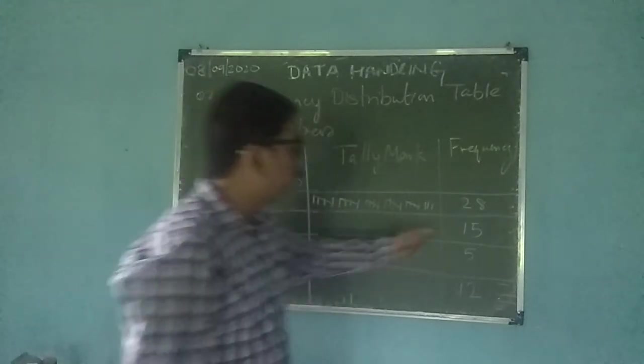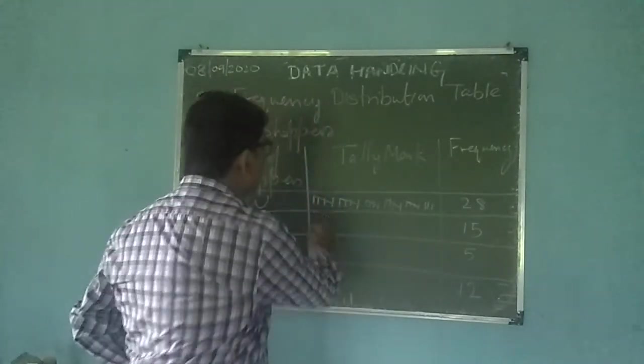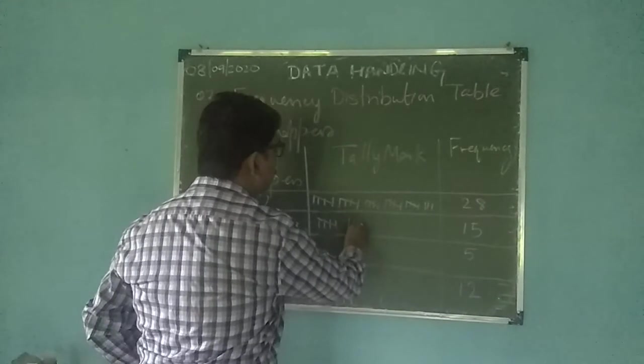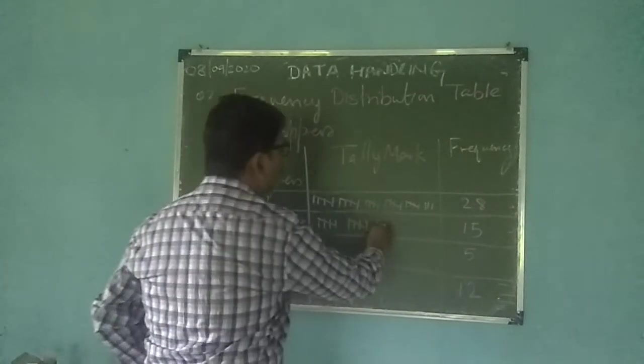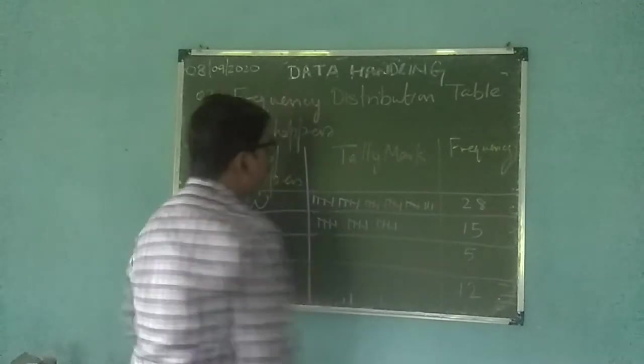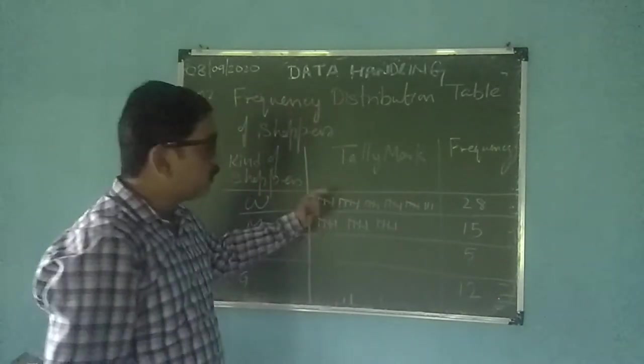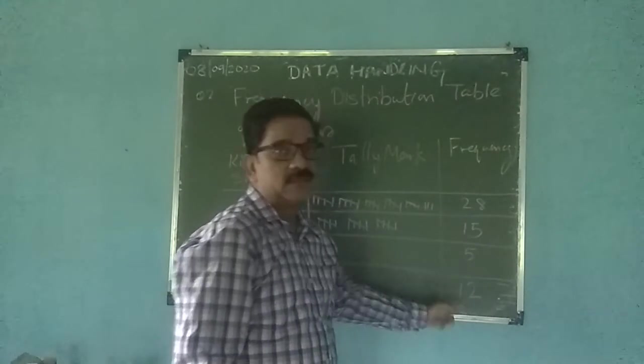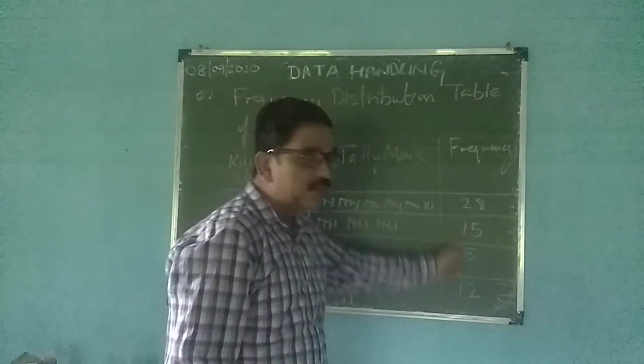Tally marks, I hope you understood. Now if it is 15, how will you do this? This must be one, two, three, four, five. One, two, three, four, five. One, two, three, four, five. First you have to do this. Remember first you have to do this, then you have to come to this. Don't come, don't do this one directly. Once you do this, then you do this.